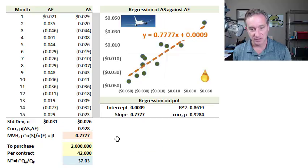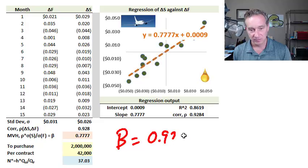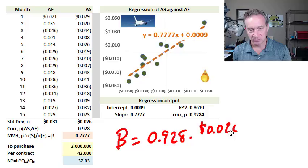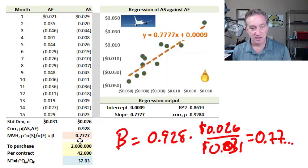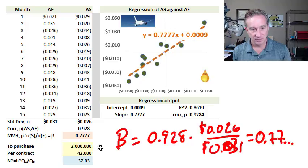Going back to the actual calculation, the minimum variance hedge ratio is the correlation multiplied by the cross volatility — making sure to get the spot in the numerator, which is 0.26 — and the standard deviation of the futures price in the denominator, 0.031 — which equals 0.7 repeating. That's the slope of the regression line, which Excel has generated, and it is the minimum variance hedge ratio.